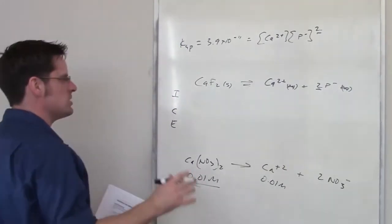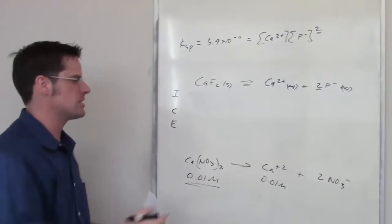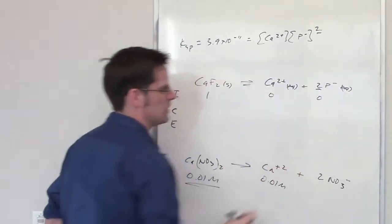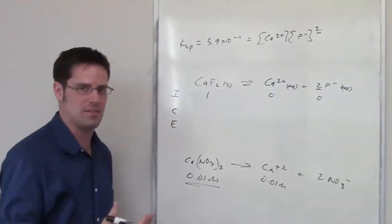So what that means is at initiation, what we've typically done with these is we've written down one as being the initial concentration of calcium fluoride and zero as being the initial concentrations of each of the ions to the left or to the right.